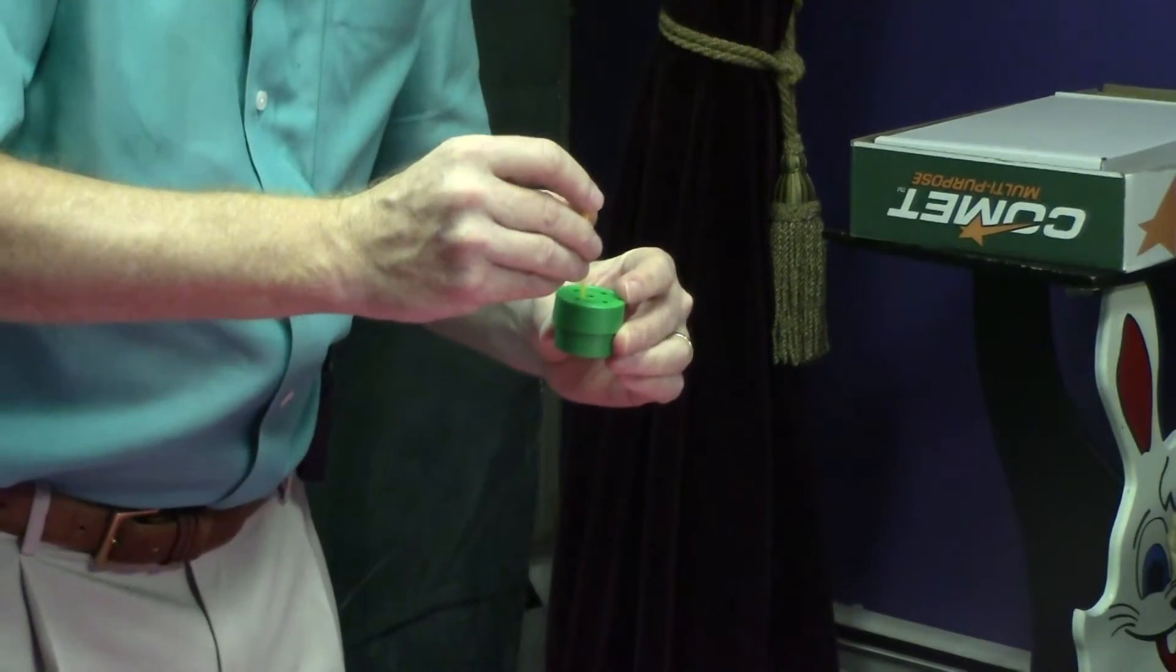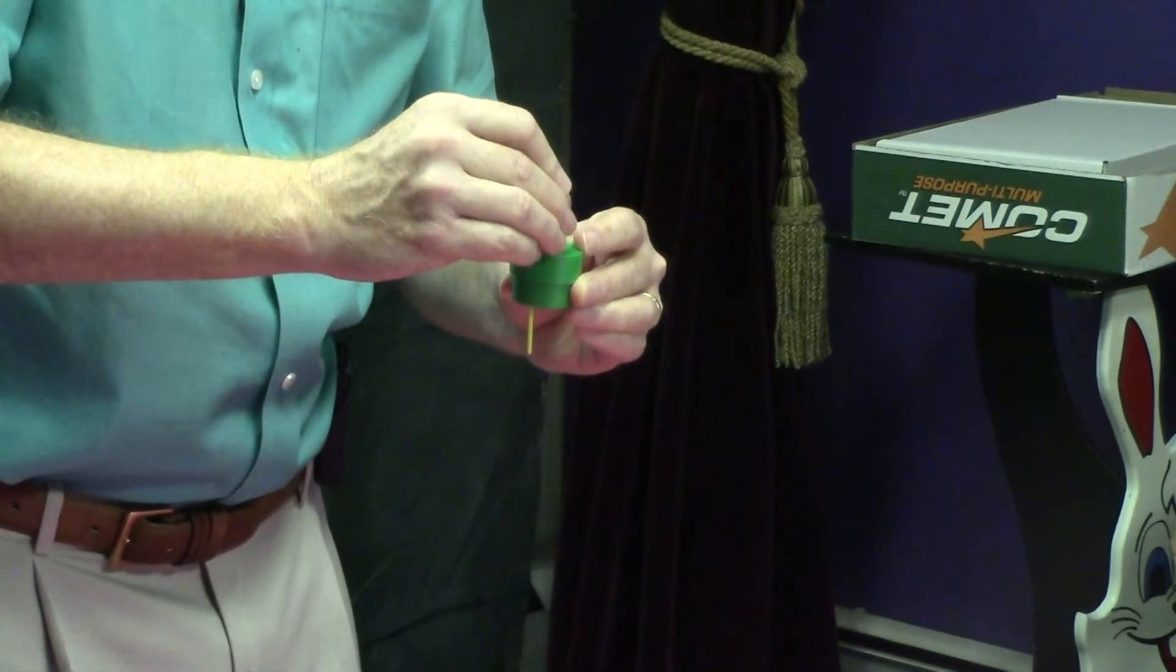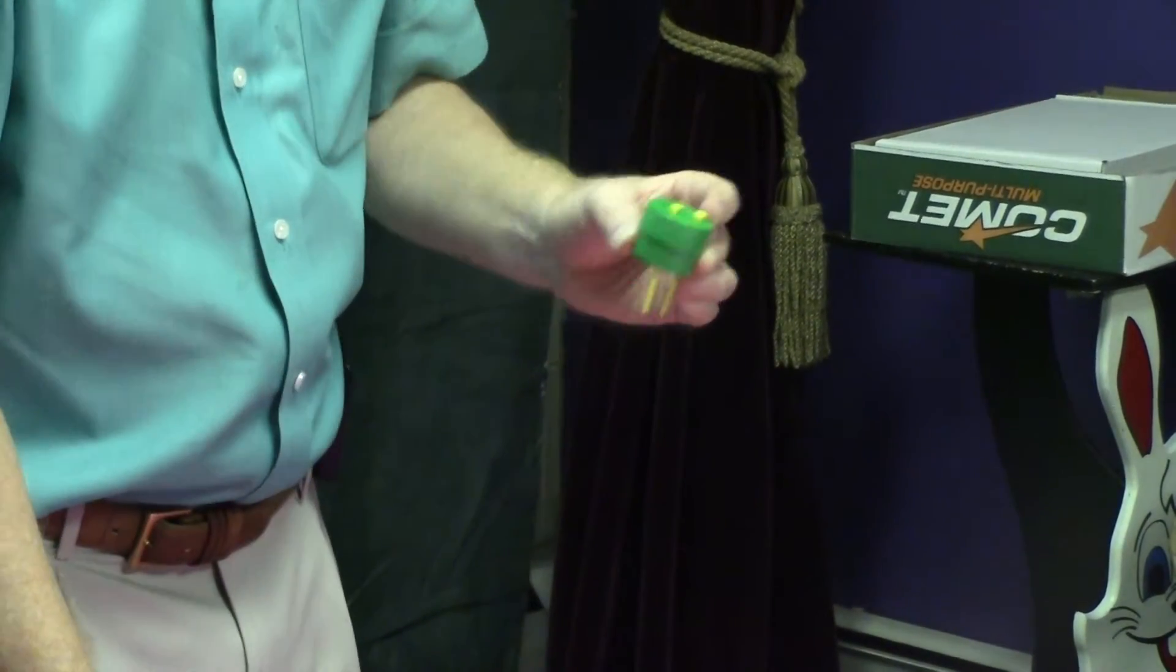So you just start out and the first one kind of flips it up, and then the other one should go in fairly easily. Okay, and that's the nail box trick.